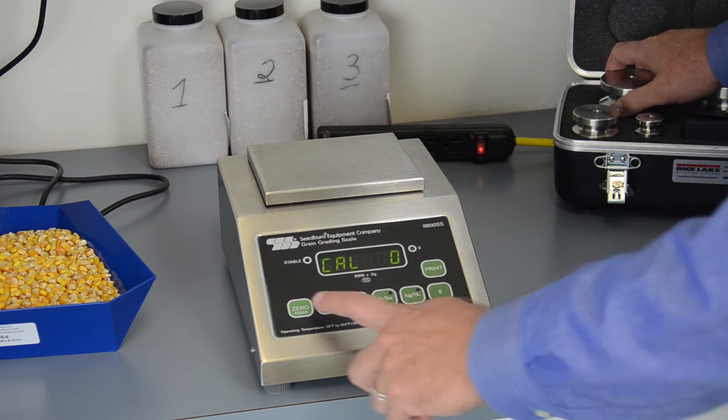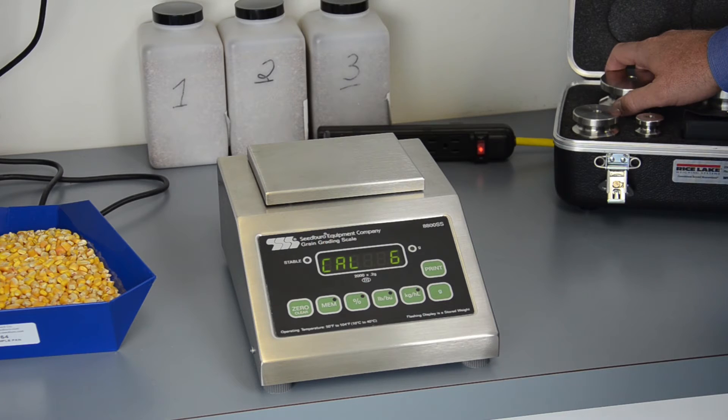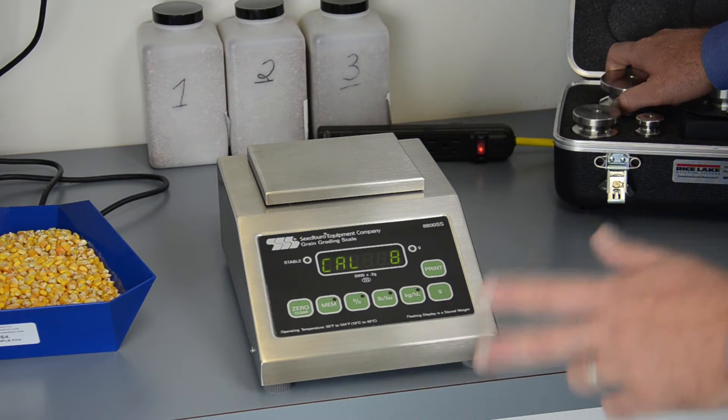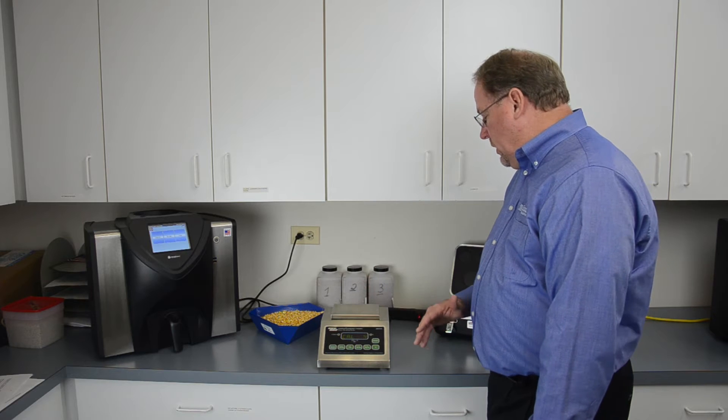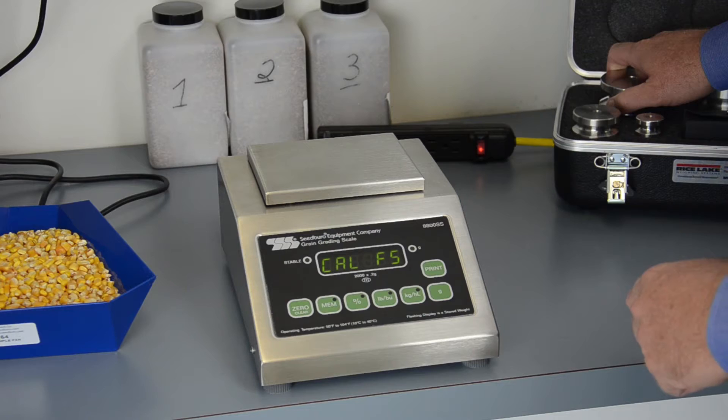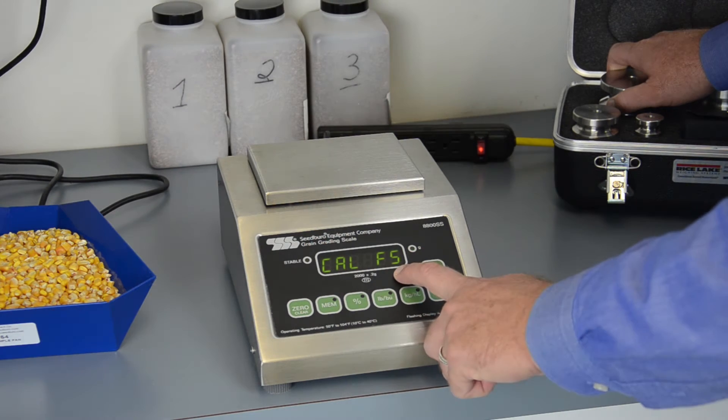It's asking for zero weight, which we have with the scale clear. We push the zero button. It will count down from eight to zero twice, and then it will automatically go to calibrate full scale.